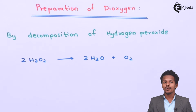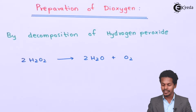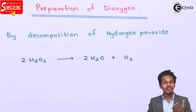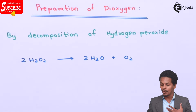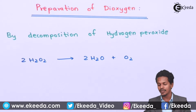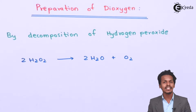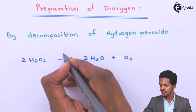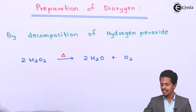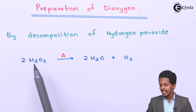In this topic we are going to talk about how we can obtain dioxygen from chemical reactions. The first method is by decomposition of hydrogen peroxide. Hydrogen peroxide is a very unstable molecule, and that's the reason that on thermal decomposition it decomposes, because it is very much unstable compared to H2.